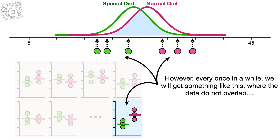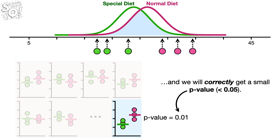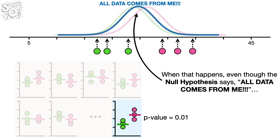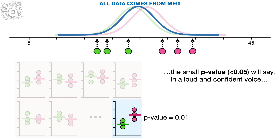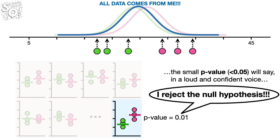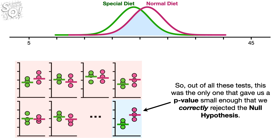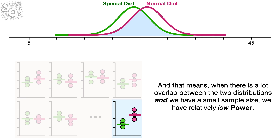However, every once in a while, we will get something like this where the data do not overlap, and we will correctly get a small p-value. When this happens, even though the null hypothesis says 'all data comes from me,' the small p-value will say, in a loud and confident voice, 'I reject the null hypothesis.' So out of all these tests, this was the only one that gave us a p-value small enough that we correctly rejected the null hypothesis. And that means when there is a lot of overlap between the two distributions and we have a small sample size, we have a relatively low power.